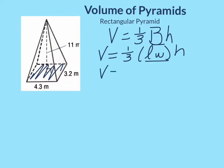So now your substitution step would be 1/3 times 3.2 times 4.3, I'm just picking up the sides of my rectangle, times h, and in this case the h is the height of your pyramid. It's this line right here.